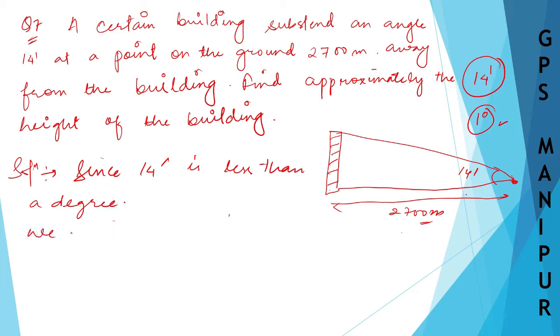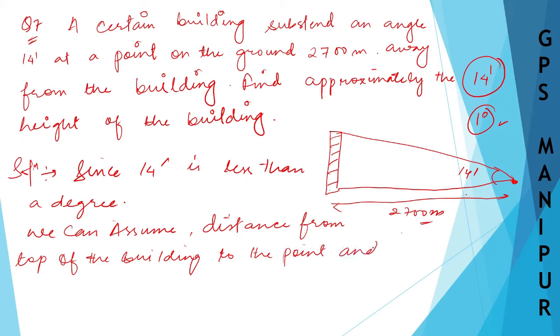We can assume distance from top of the building to the point and distance from bottom of the building to the point on the ground to be equal.